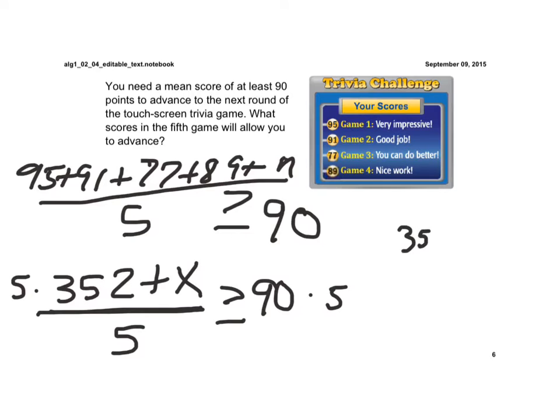So now I'm left with 352 plus x is equal to 450. Now, I'm going to subtract 352 from each side. And if I do this, I get x is greater than or equal to 98.